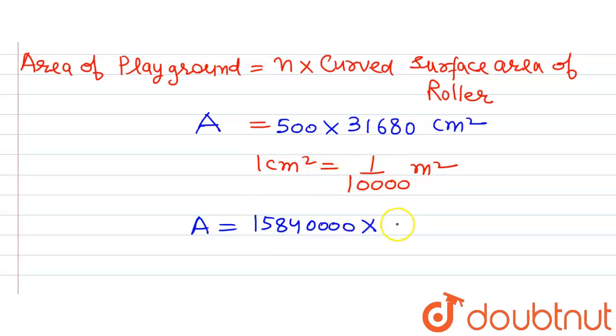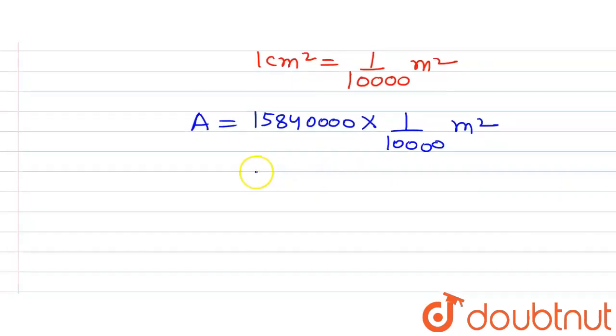But 1 cm square we are going to convert using the formula. There are four zeros in the numerator and four zeros in the denominator, so they will get cancelled out.